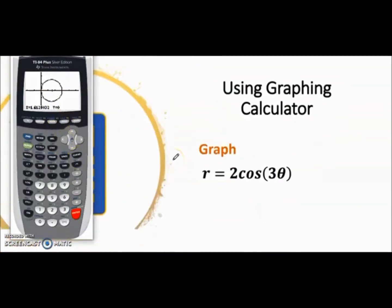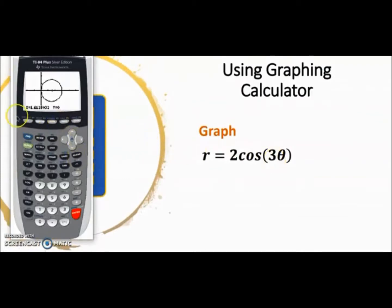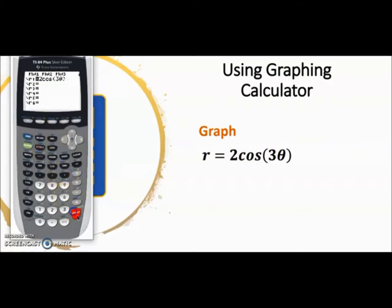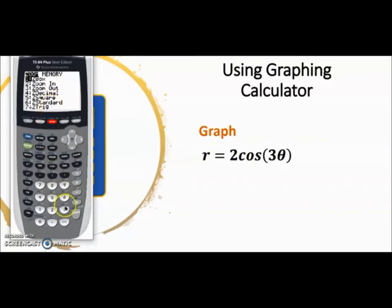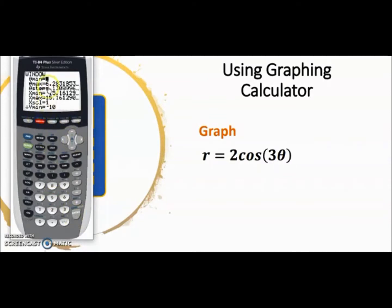Now let's do another example: 2·cos(3θ). Go back to Y=, press 2, then cosine, then 3θ, close the parentheses, press Enter, and graph it. Go to Zoom and select Square which is 5. You can go back to standard setting (6) and then square again to manipulate it, and zoom back in using the zoom feature. Now you can see this is a rose with 3 petals — that should make sense, because the coefficient 3 gives 3 petals. If it were 5 it would have 5 petals; if it were 4 it would have 8 petals.